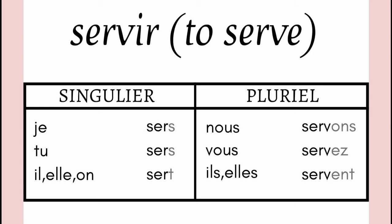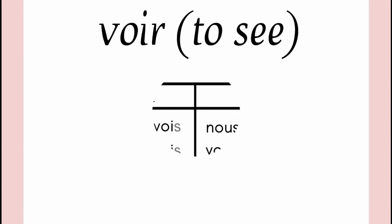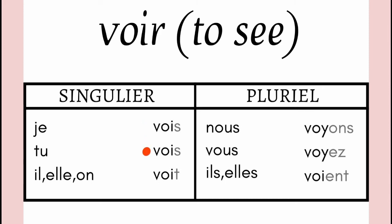Let's move on to the next verb which is VOIR. VOIR means to see. Now here we can again see the irregularity: in je, tu, il, elle and ils, elles plural the radical appears as VOIR, but in nous and vous it has become VOY.